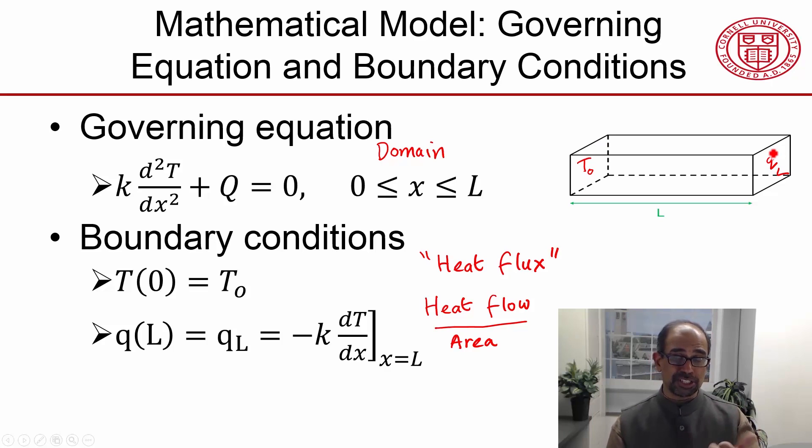And the two major kinds of boundary conditions you have are, you know the value or you know the gradient of the value. So this mimics both the major types of boundary conditions.